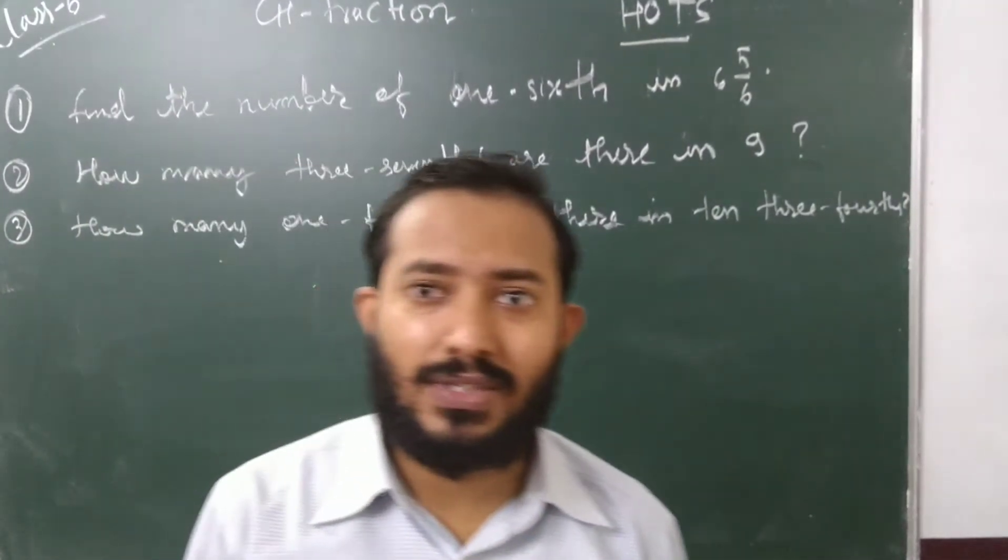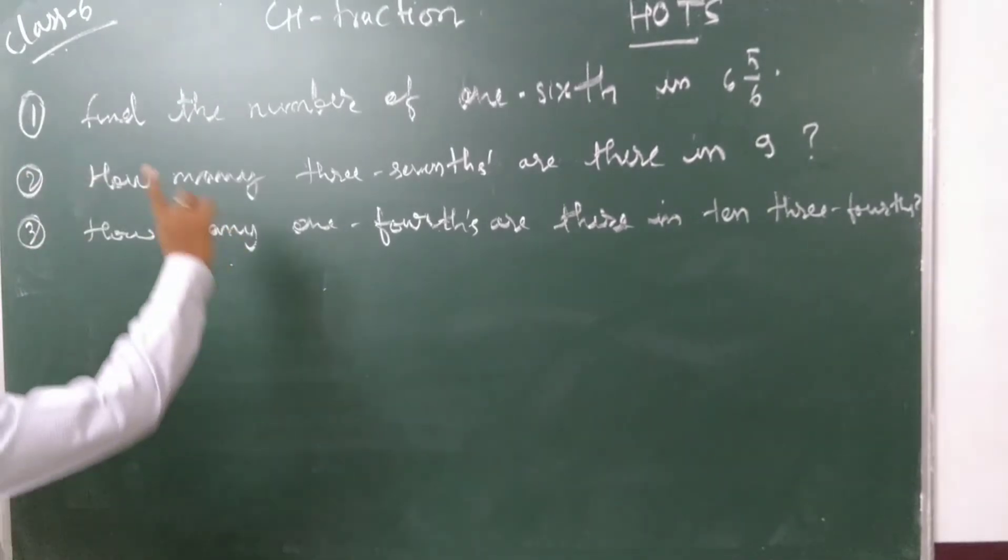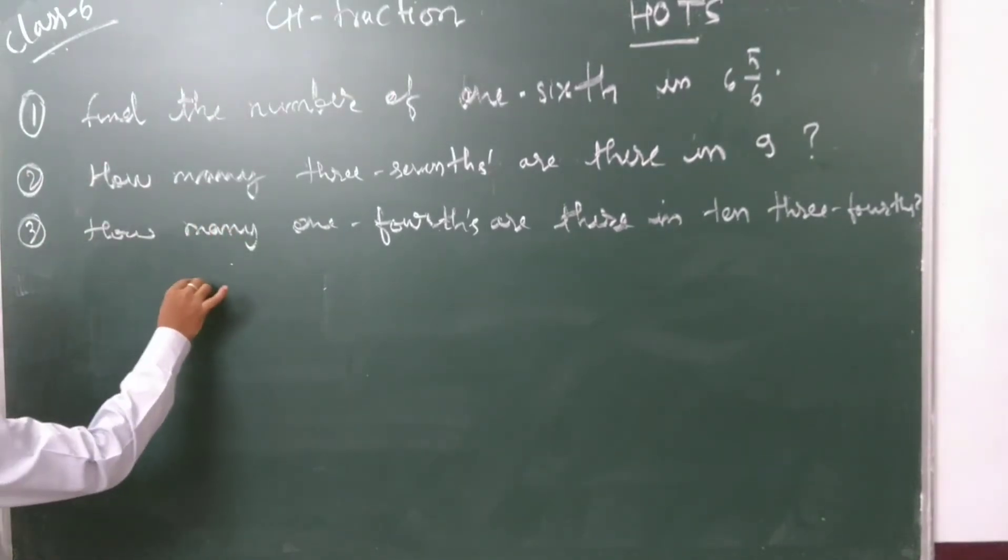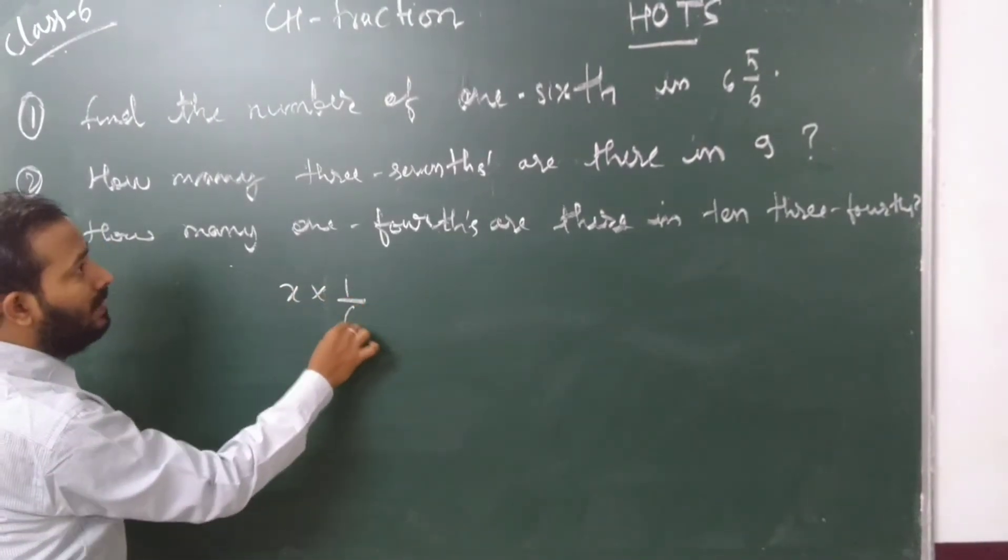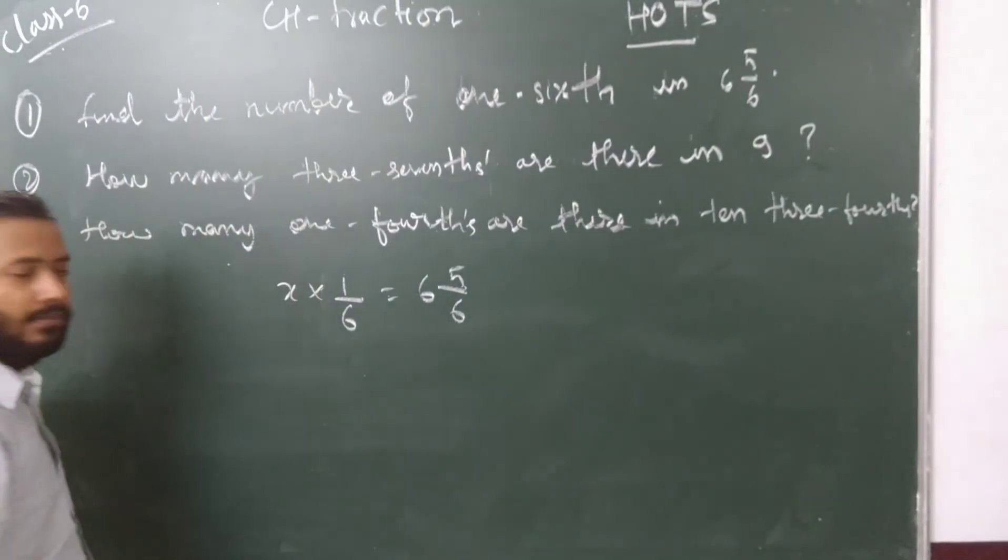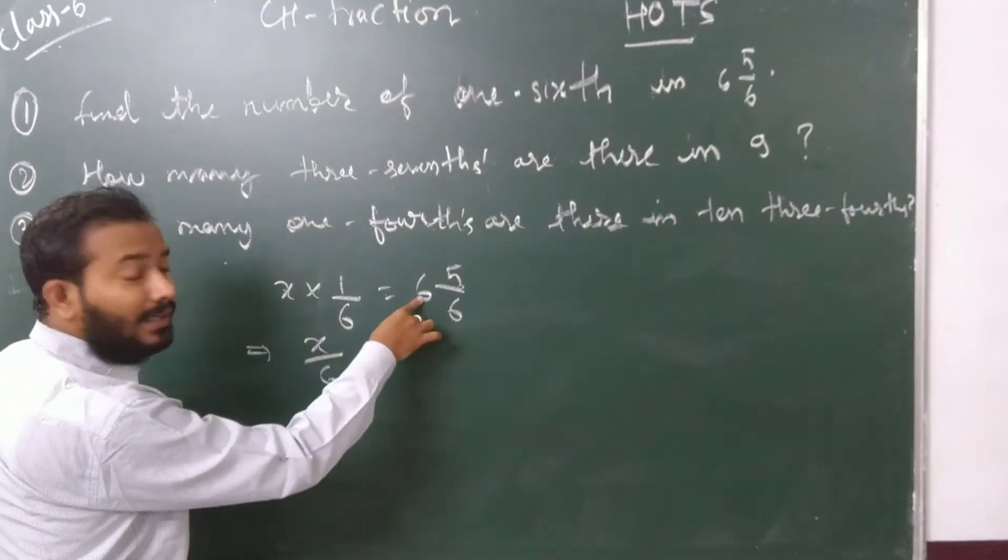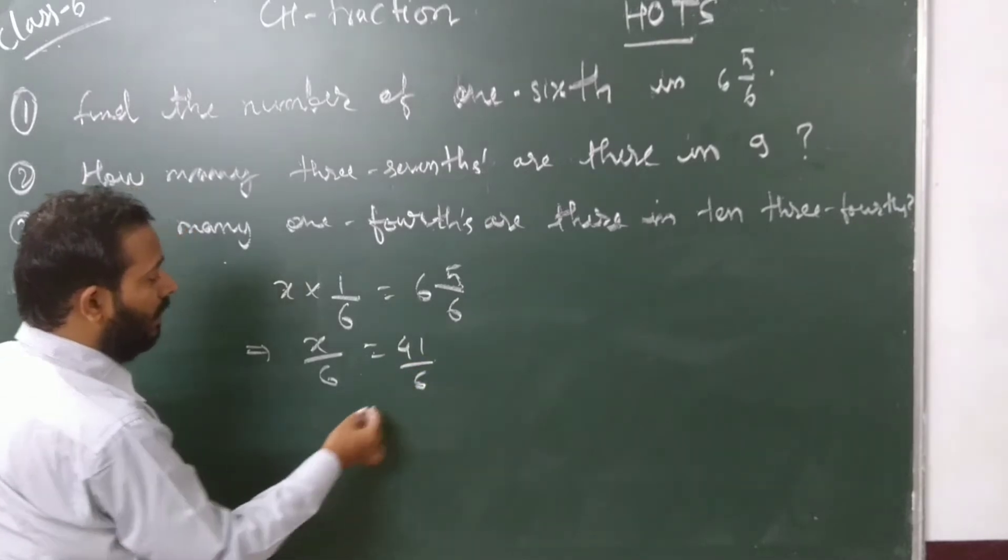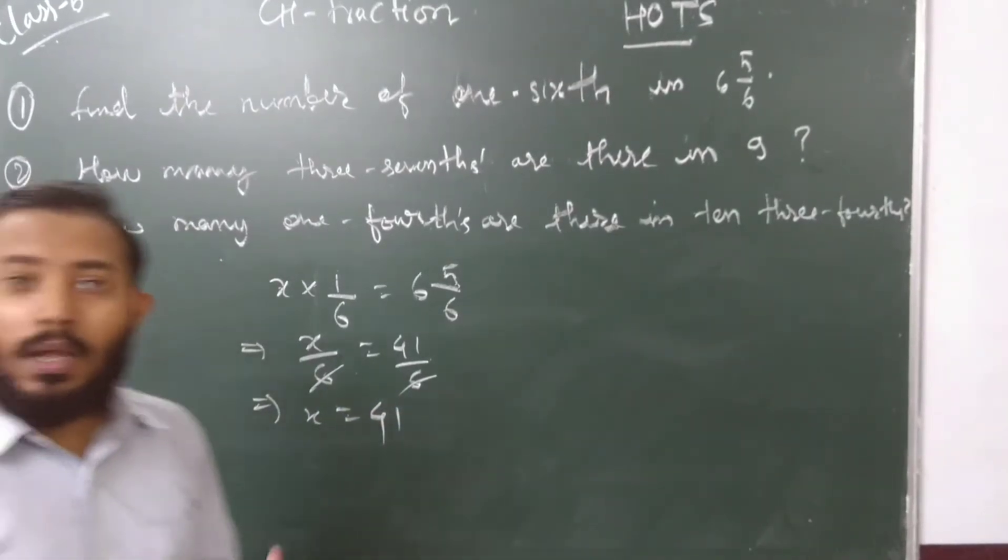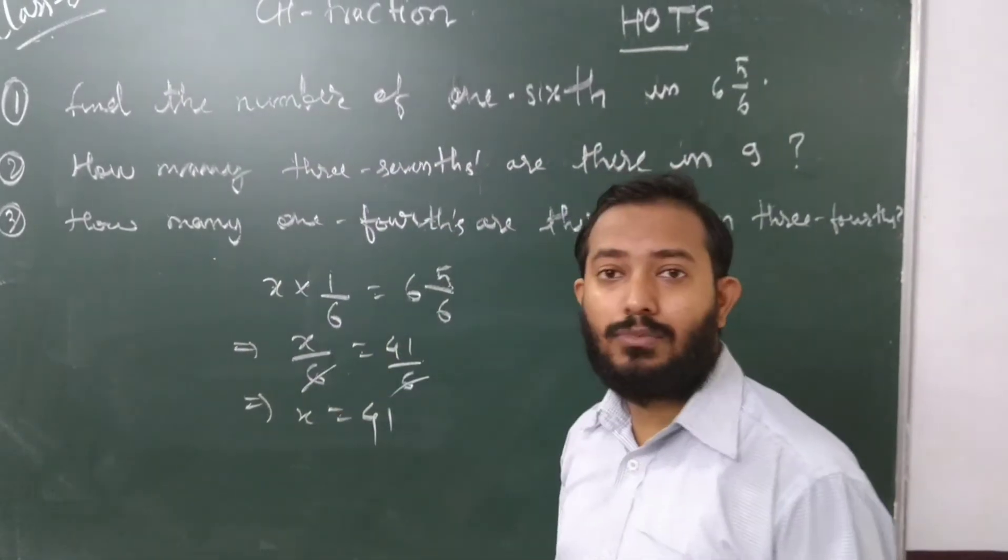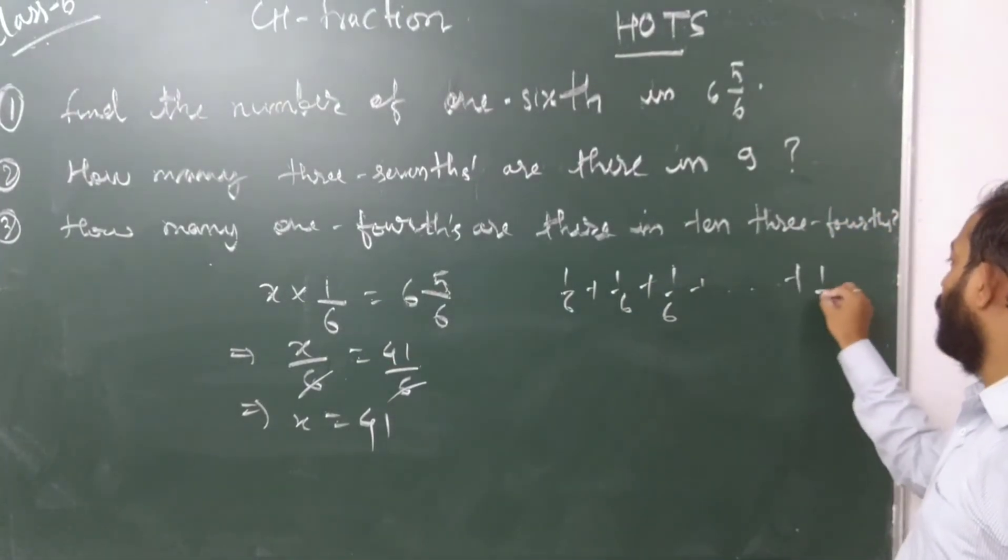We'll use x here - x means a variable which we don't know. According to the question, x times 1/6 equals 6 whole 5/6. How are we going to solve this? You multiply: x/6 equals 36 plus 5, which gives you 41/6. The 6s cancel, so x equals 41. That means it will take 41 times one-sixth - that means 1/6 plus 1/6 plus 1/6, and if you continue 41 times, you will get 6 whole 5/6.